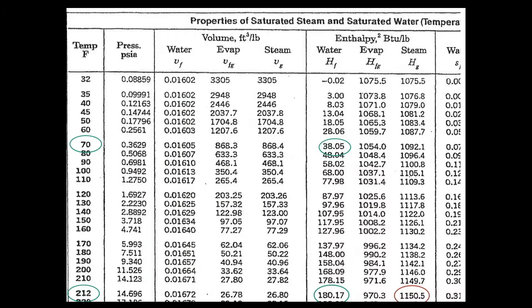If you've never seen the steam tables before, this is a zoomed-in version of the saturated steam tables. There's a lot of information here — volume and all this other stuff — but for energy purposes, we're primarily interested in the enthalpy, which is always in units of BTUs per pound. Enthalpy is denoted as H: H sub F is the enthalpy in the fluid state, and H sub G is the enthalpy in the gaseous state.